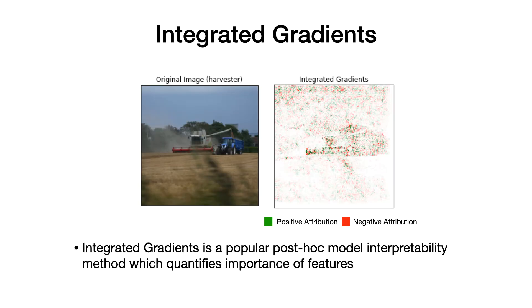Integrated gradients, or IG, is a popular method for feature attribution, which assigns importance to each input feature. For example, this figure shows the contribution of each pixel in this input image to a classifier's prediction of a harvester.